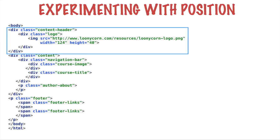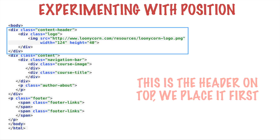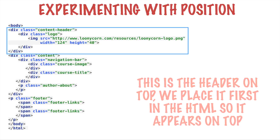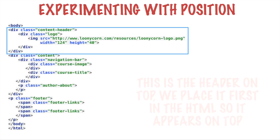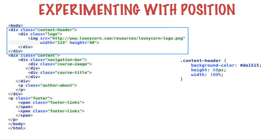What's new is the content header. This is the header of the page that we've just added, and within it is the logo. We place it as the very first part within the body element so that it appears first. Remember that HTML renders elements from top to bottom, so we want the header to appear on top, which is why we place it as the first element. So right after the body tag comes the header tag, and here is the CSS for the header.